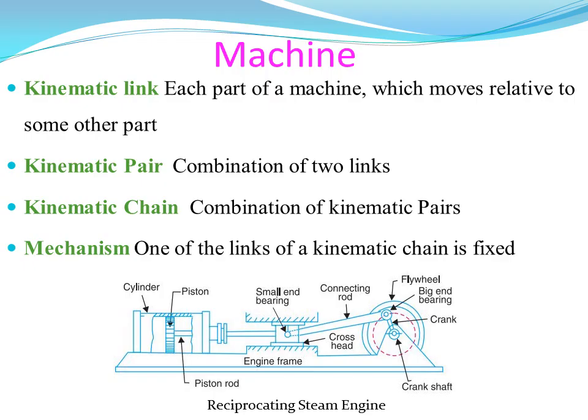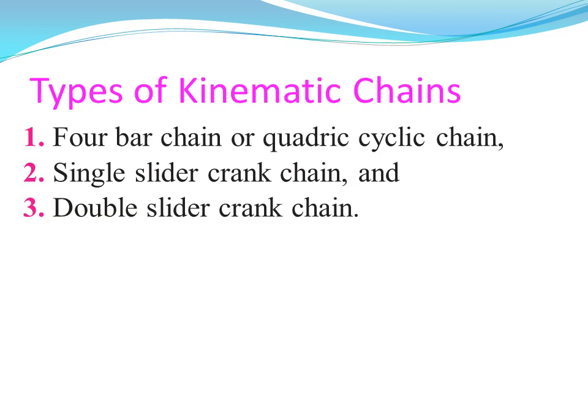In this case, we can use kinematic chains. A kinematic chain is a combination of kinematic pairs. So in this chain, we will fix a mechanism. One of the links of a kinematic chain is fixed — that means we will call it a mechanism. And that mechanism doing useful work means we will call it a machine.